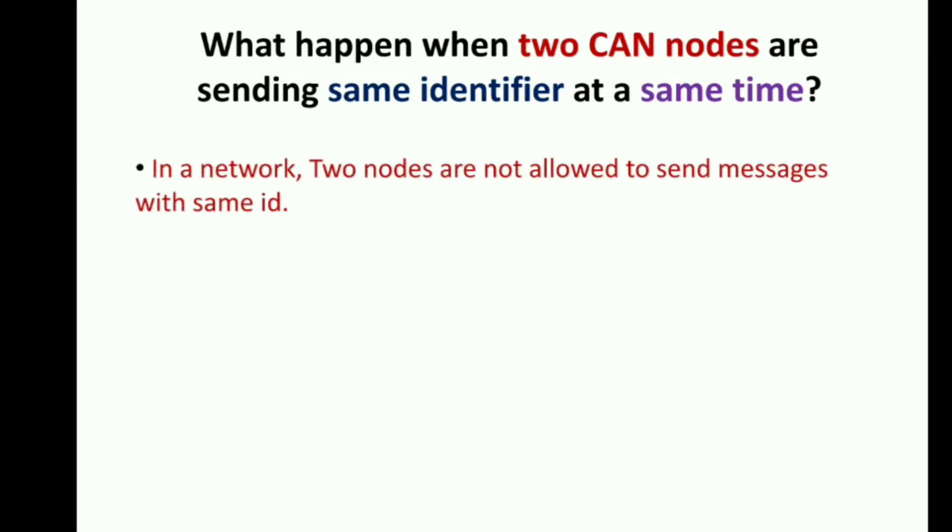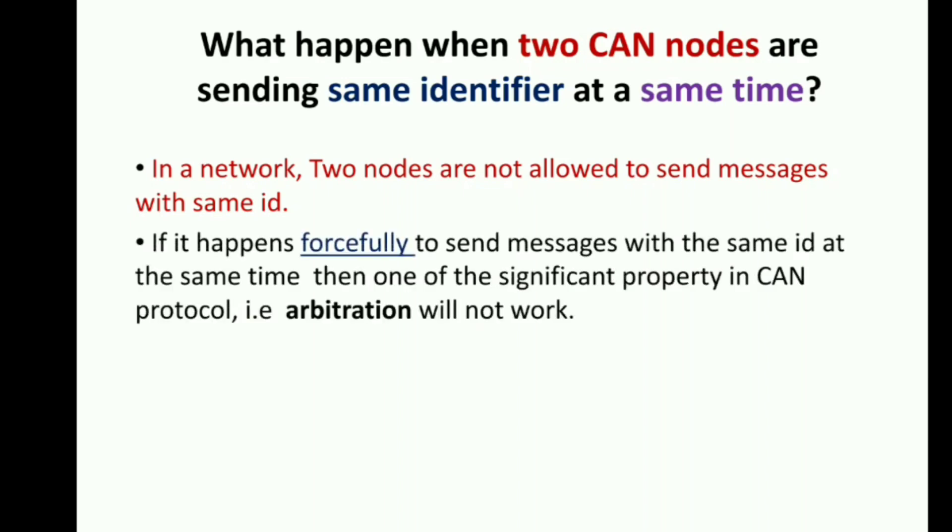In a network, two nodes are not allowed to send messages with same ID. If it happens forcefully to send messages with the same ID at the same time, then one of the significant properties in CAN protocol, that is the arbitration, will not work.